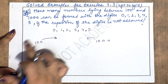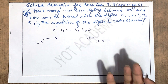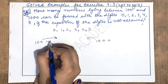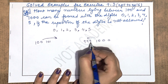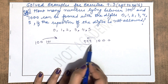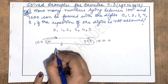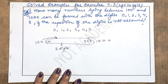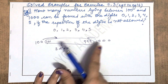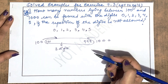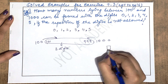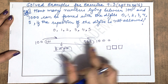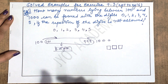In dono values ke in between jitne bhi numbers hain, aapko unki count batani hai. Clearly dikh raha hai ki 100 ke baad 101 aur 1000 se pehle 999 aata hai. Jo bhi numbers aayenge in between, wo sab three digit ki form mein honge for sure. 101 se 999 tak, 100% surety hai ki wo three digit numbers hi hote hain.